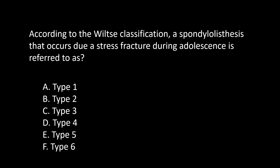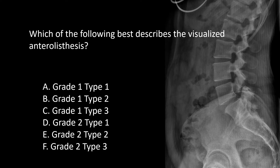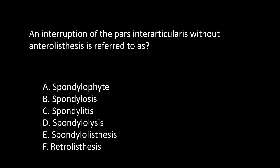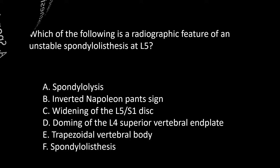Which of the following best describes the visualized anterolisthesis? This looks like a spondylolytic spondylolisthesis of L5, probably a grade 1 — so this is a grade 1 type 2. An interruption of the pars interarticularis without anterolisthesis is referred to as spondylolysis.